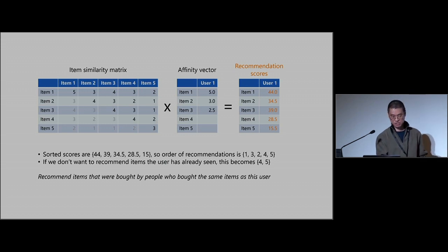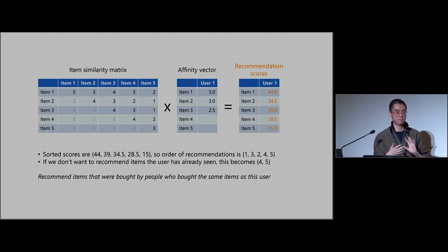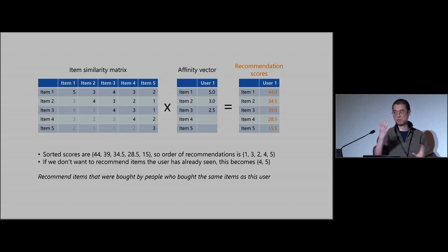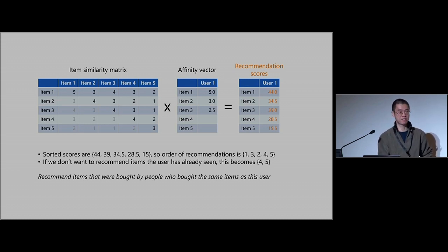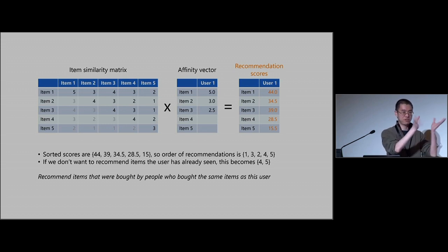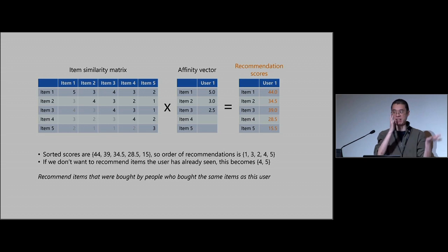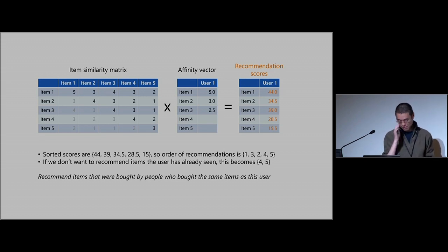Contrast that with latent factors and matrix factorization, where you end up with factors that may be uninterpretable. The best you can do is plot them on some kind of chart and say these movies all cluster together and those other movies cluster together — in some vague way you can say they are similar.